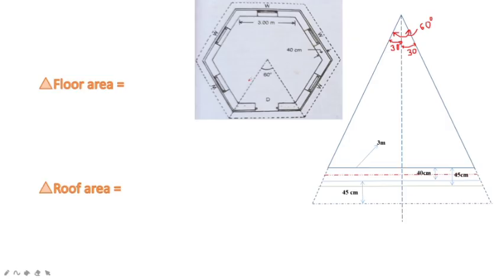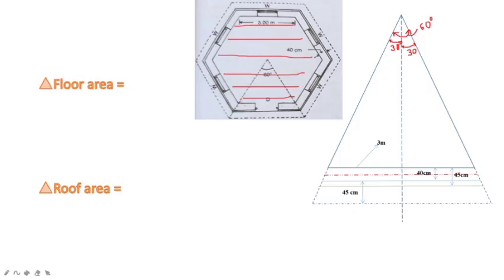Now we go to estimate the floor area and roof area. We can easily identify the floor area. The formula is half into base into altitude, and we use 6 into the area of one inside triangle, since the hexagon has 6 triangles.